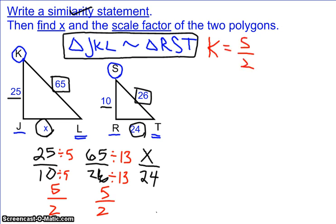Now if you set up your fractions and you reversed, you had the 10 on top, the 25 on the bottom, the 26 on top, the 65 on the bottom, that would give you a scale factor of 2 over 5.